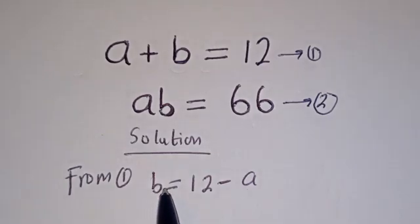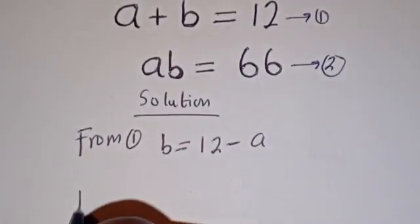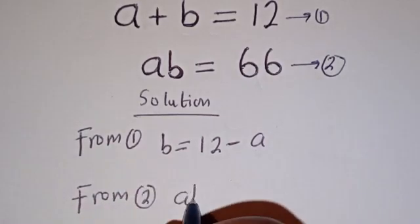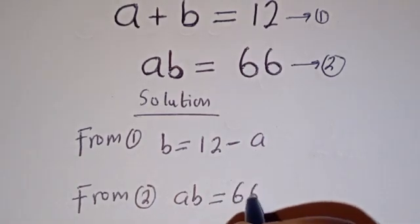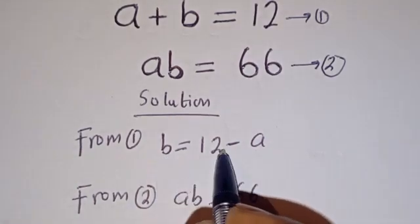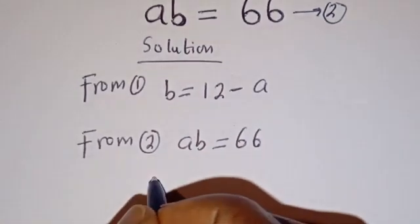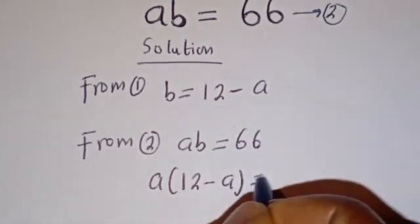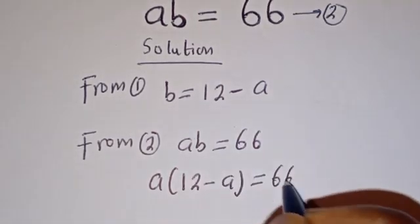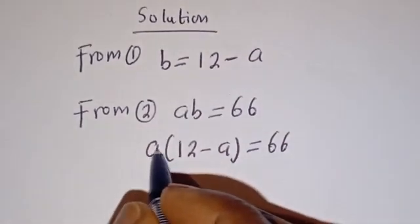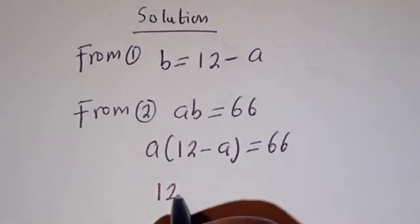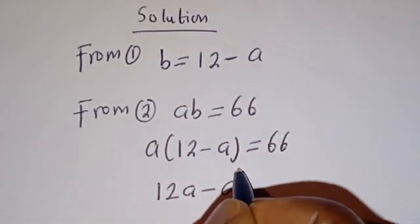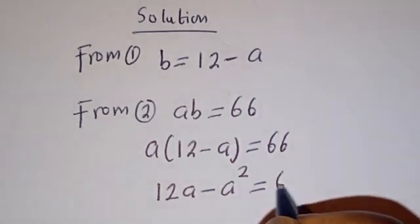Now we can substitute for B in equation 2. From equation 2, A B is equal to 66. Then when B is equal to 12 minus A, we have A bracket (12 minus A) is equal to 66. Let's open the bracket: A multiplied by 12 gives 12A, minus A multiplied by A gives A squared, so 12A minus A squared is equal to 66.